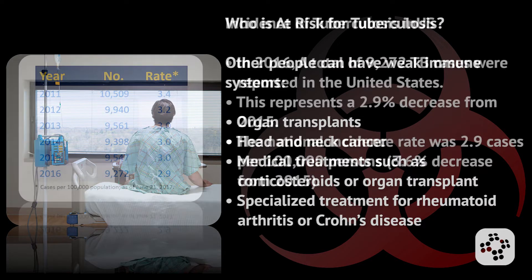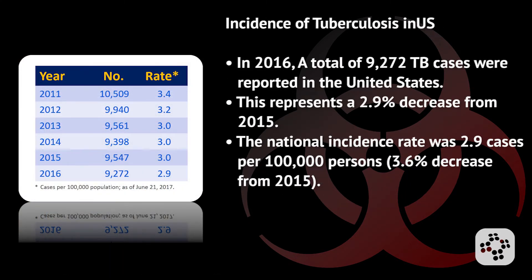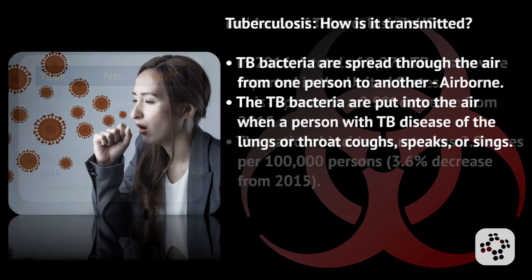What is the incidence of tuberculosis in the United States? In 2016, there were a total of 9,272 TB cases reported in the US alone. This represents a 2.9 percent decrease from 2015. The national incidence rate was 2.9 cases per 100,000 persons, a 3.6 percent decrease from 2015.